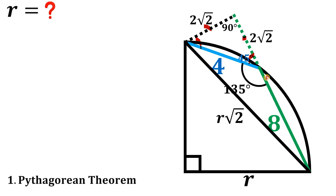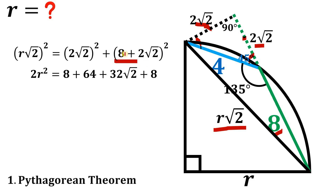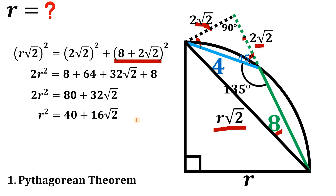Using the Pythagorean theorem with the hypotenuse and legs, we get: (r√2)² = (2√2)² + (8 + 2√2)². Simplifying the left side gives 2r². On the right side, (2√2)² = 8, and expanding (8 + 2√2)² gives 64 + 32√2 + 8. Combining like terms: 2r² = 80 + 32√2. Dividing both sides by 2: r² = 40 + 16√2.